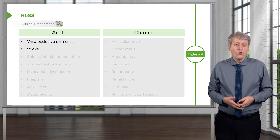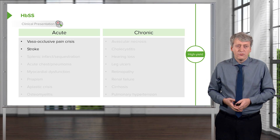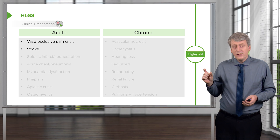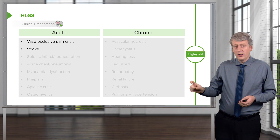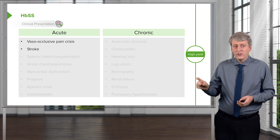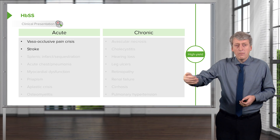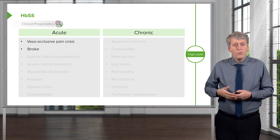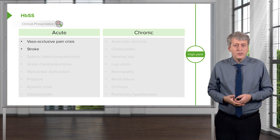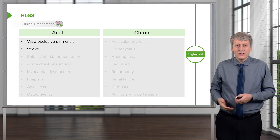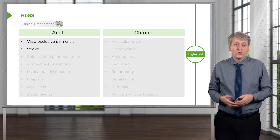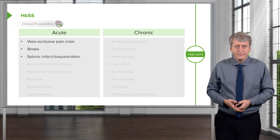These patients are also at increased risk for stroke. These sickled cells can cause microvascular trauma, which can set up a hypercoagulable cascade. So we need to be aware that these patients with sickle cell disease can have a stroke even in childhood.